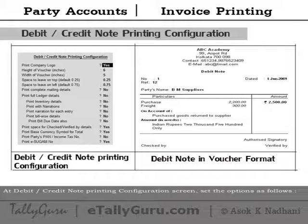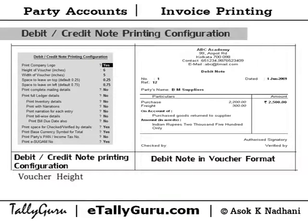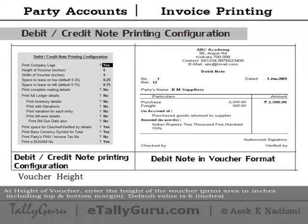At the debit credit note printing configuration screen, set the options as follows. For company logo, at 'Print company logo' set yes. At the voucher, useful to print on plain paper stationery, set no — no logo is printed. For voucher height, enter the height of the voucher print area in inches including top and bottom margin; the default value is six inches.